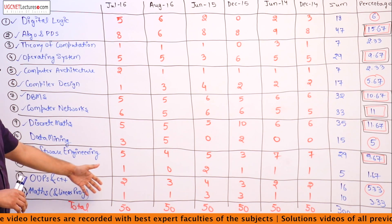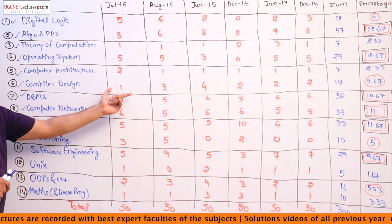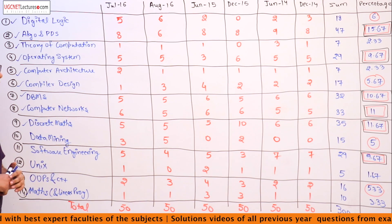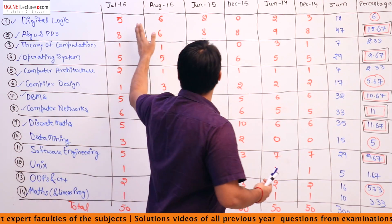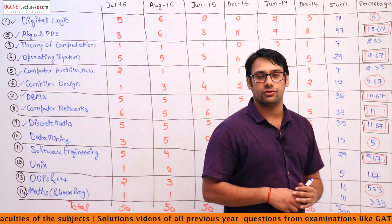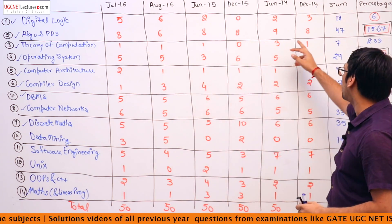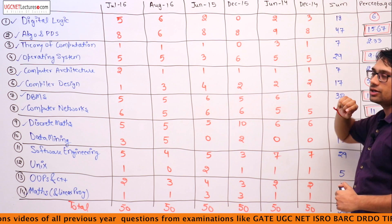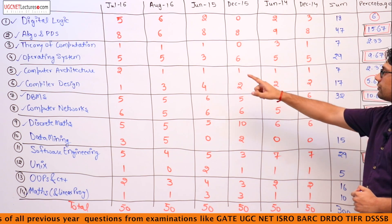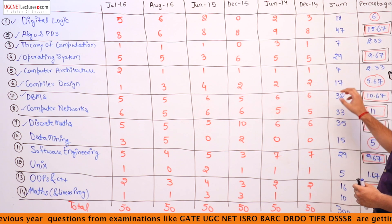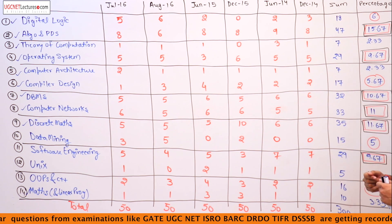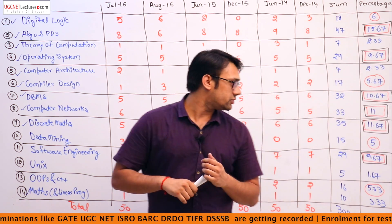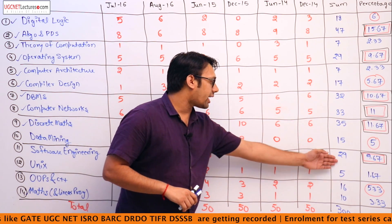We have taken all the numbers — for compiler design, DBMS, discrete mathematics — counting how many questions were asked in which year. Out of this analysis, the total number of questions asked in the last 6 years per subject is: digital logic 18, algorithms and programming with data structures 47, operating system 29, compiler design 17, DBMS 32, computer networks 33, and discrete mathematics 35.